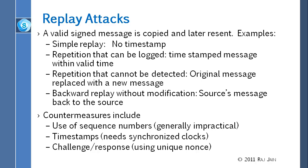Some countermeasures people can use: put in sequence numbers — most of the time you will have nonces so that we can match that this is the request and this is the response to that same request. We will have timestamps, but timestamps are a problem because we need synchronized clocks and clocks are not synchronized. The third thing is challenge-response. Sequence numbers are kind of not reliable because computers crash and we forget the sequence number, so it's better to use a random number, which is a nonce.